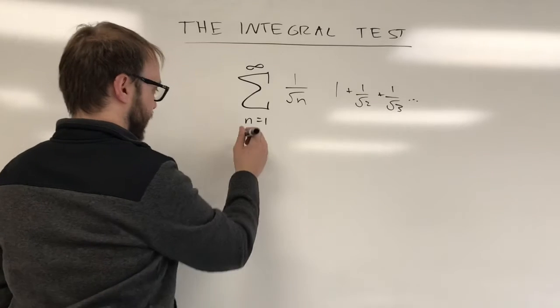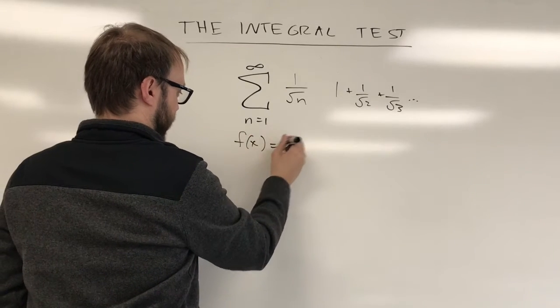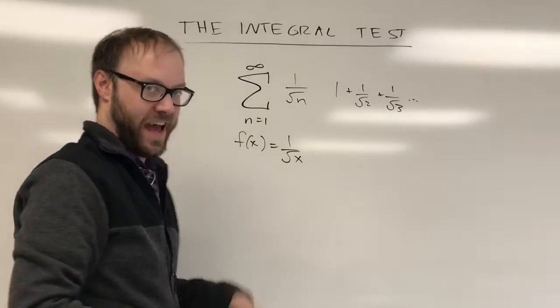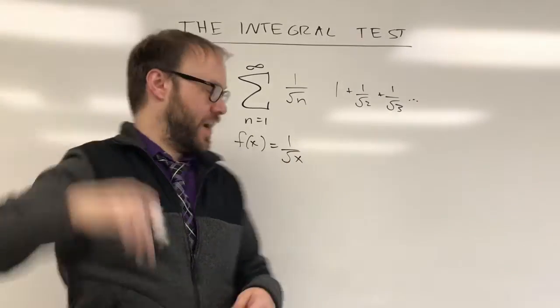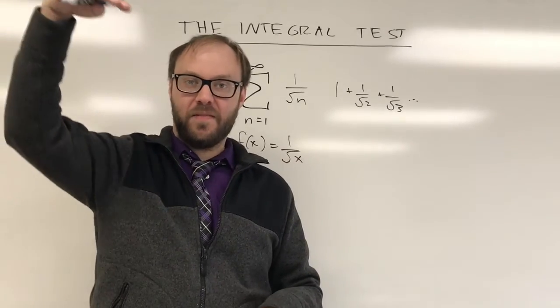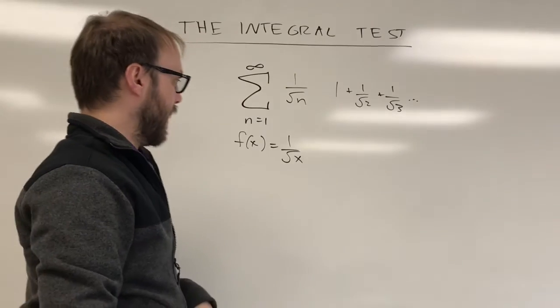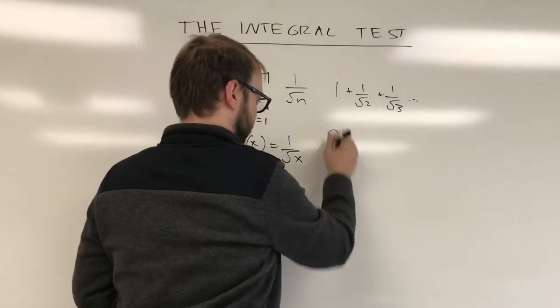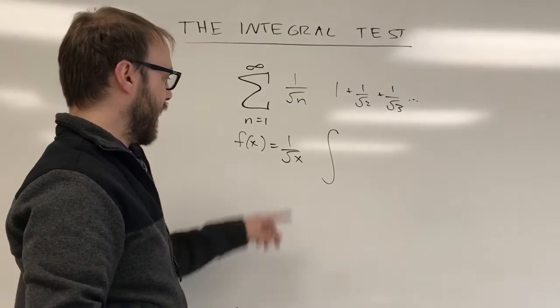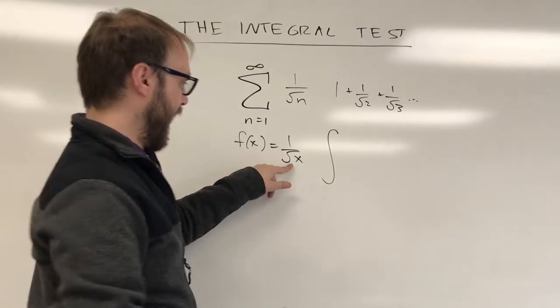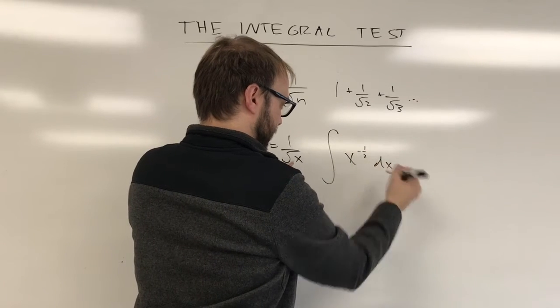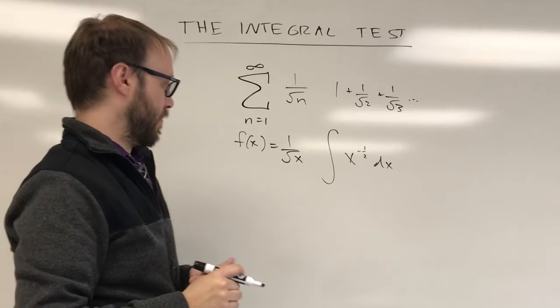So we're going to compare this to the related function f of x is equal to 1 over radical x. If you graph that, it's a positive function. Primary square root has to be positive principal square root. So it's going to be a positive decreasing function as well. So remember, the concept here is you're going to take the integral of that related continuous positive decreasing function. That's x to the negative 1 half power. So we're going to take the integral of x to the negative 1 half power dx, and we're going to see where that works out.